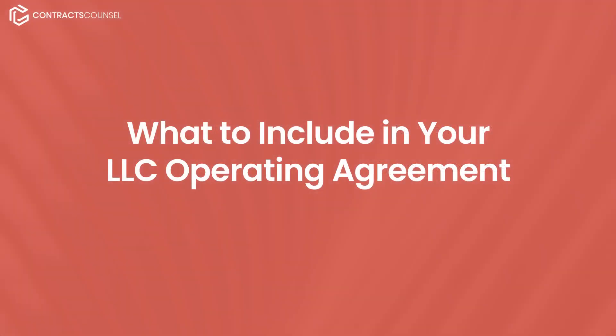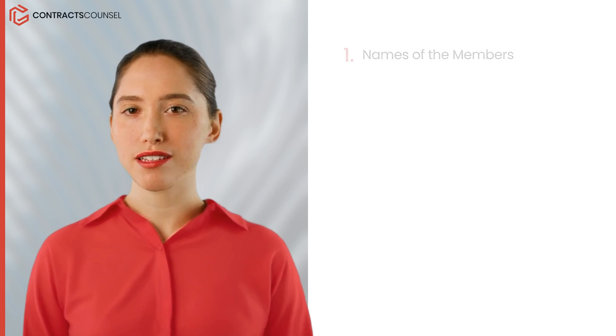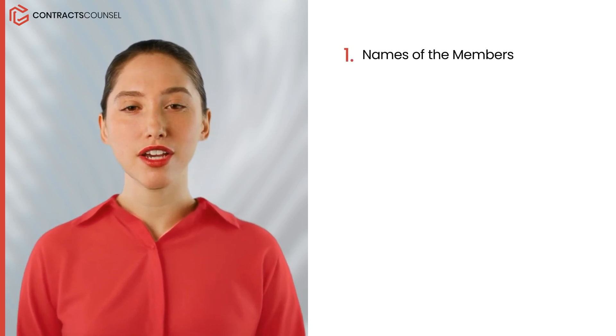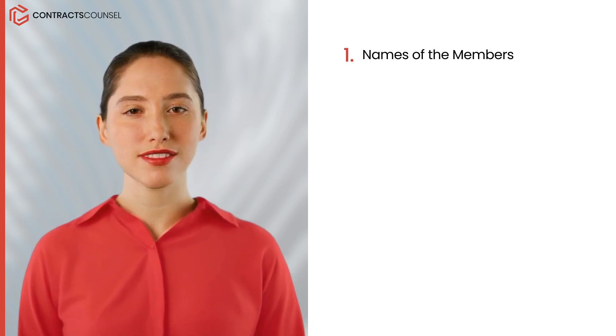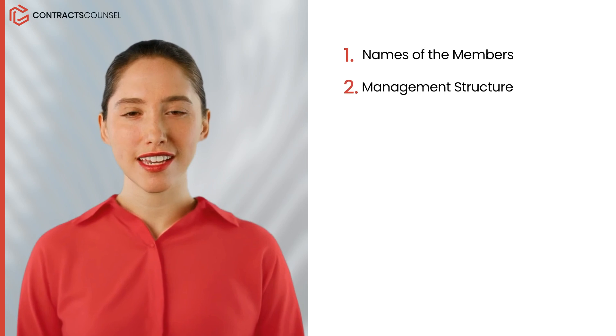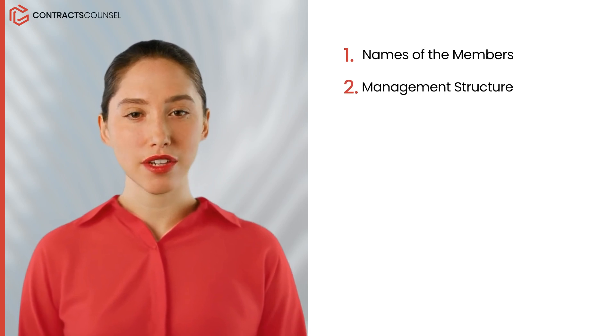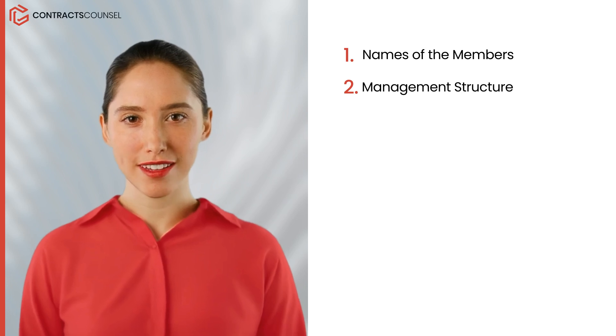What to include in your LLC operating agreement. There are common terms used in LLC operating agreements. Here are some you will find. 1. Names of the members — the agreement includes the names of all members involved in the LLC. 2. Management structure — this describes whether the LLC is member-managed or manager-managed.